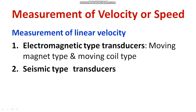Do you know what is velocity? Velocity is nothing but the rate of change of displacement. So you can write v = dx/dt, where x is the displacement, and the unit of velocity is meter per second, or you can express it in kilometers per hour as well. In different types of industrial applications, especially in automotive engineering, we need to have a measurement of velocity, especially a speed meter.